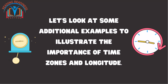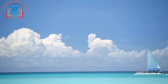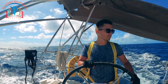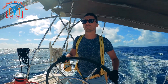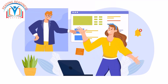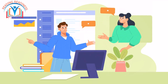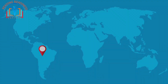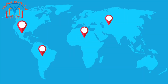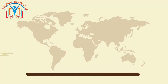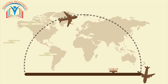Let's look at some additional examples. Imagine you're a sailor on a ship traveling from New York to London — as you cross the Atlantic Ocean, you need to adjust your watch to the local time zone. Or imagine you're a business owner with offices in New York and Tokyo. Tokyo is 13 hours ahead of New York, so you'll need to adjust your schedule accordingly to ensure that you're both available at the same time.